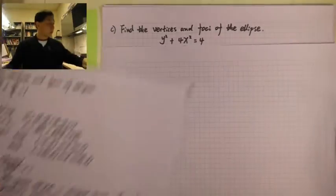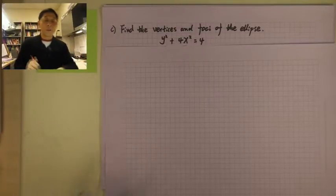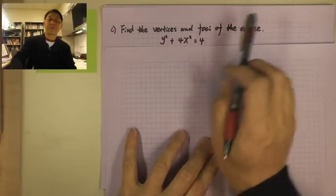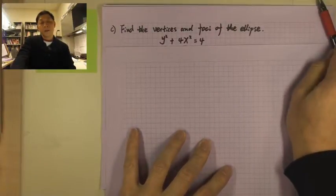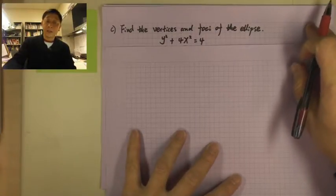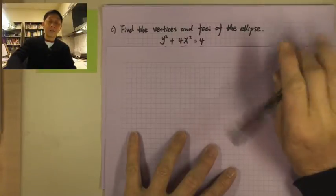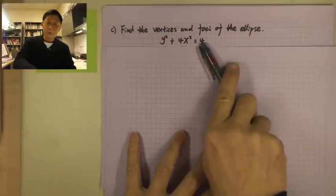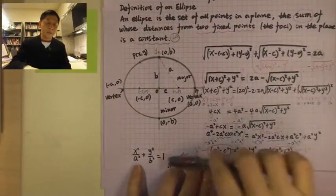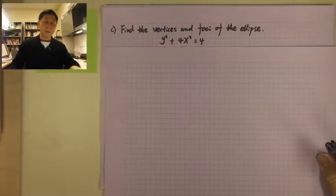Let's look at Example C. Example C is: find the vertices and the foci of the ellipse. This one is not in standard form, so what we have to do is divide both sides by 4. We need the right-hand side to be 1, that's why we need to divide by 4.